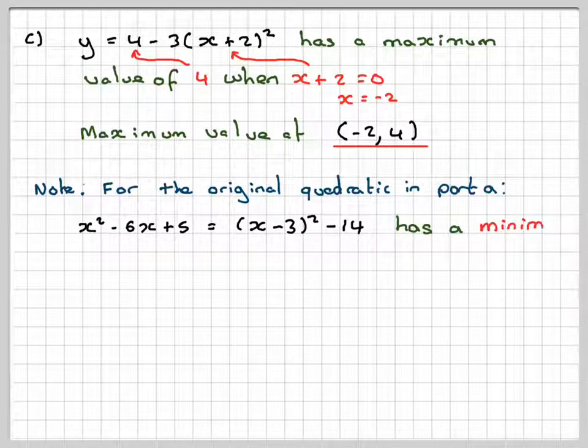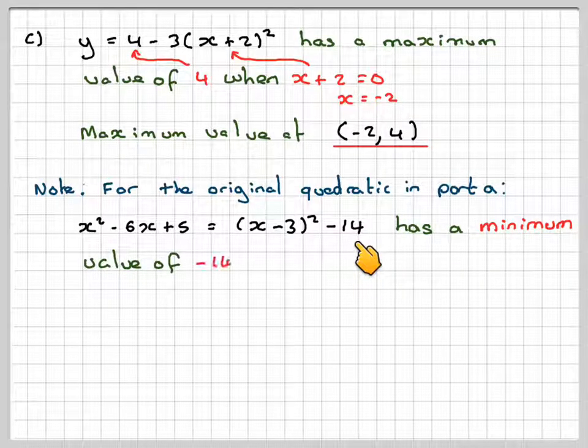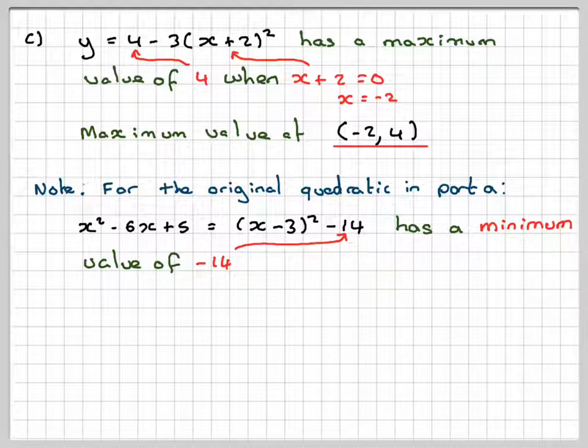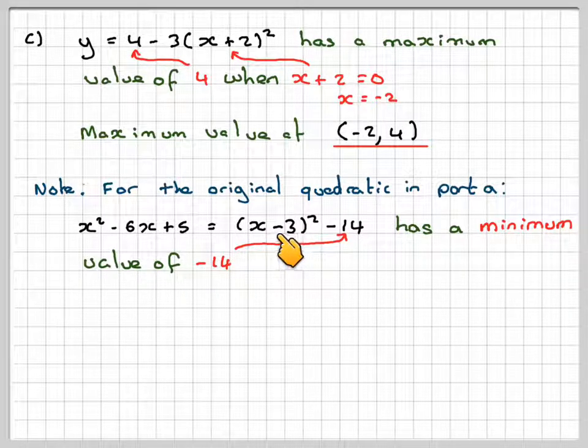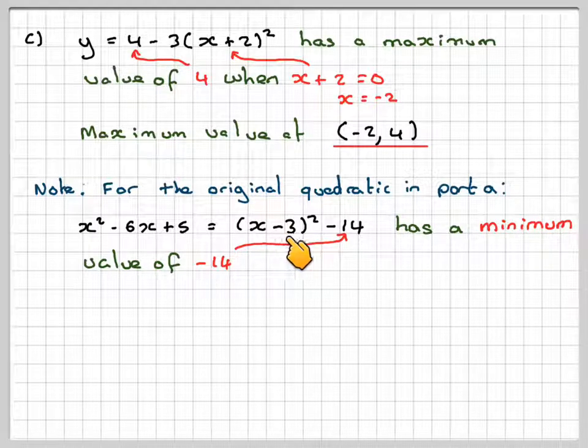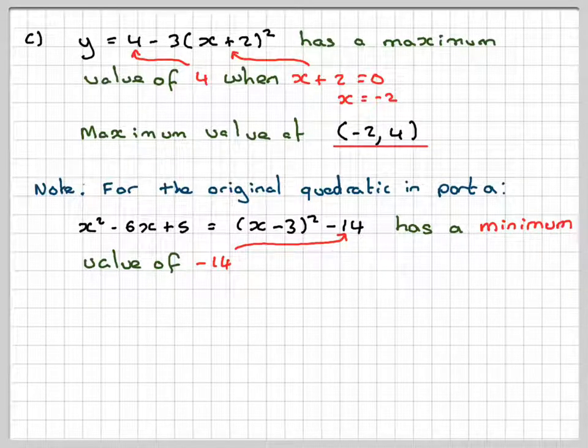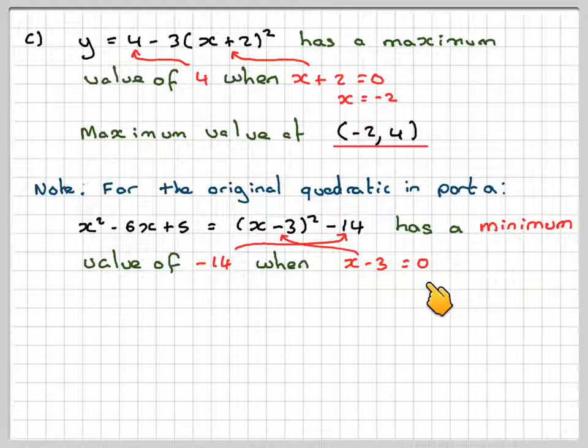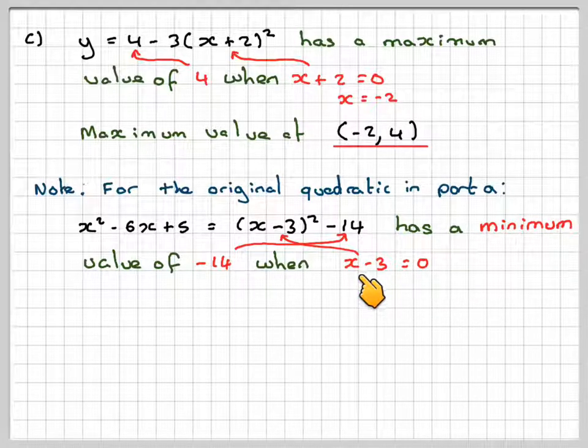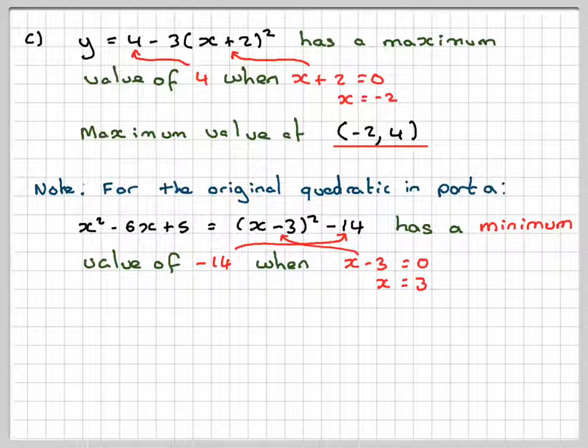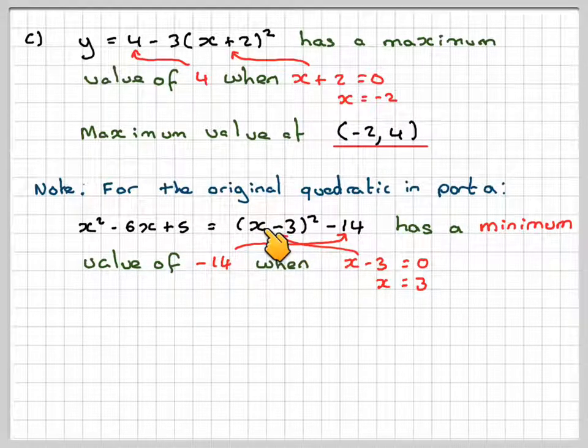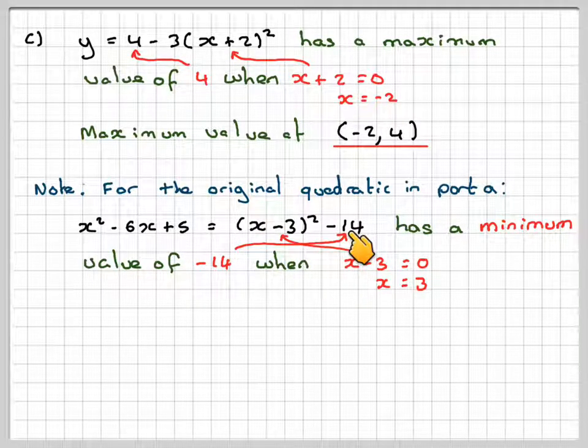Now, the lowest value that this could ever be is -14, because every time you put a number in here, it will become positive and you take it away from 14, that will get more than 14. So this is the minimum value here. So when x = 3, x - 3 = 0, 3 - 3 is 0, 0² minus 14 is -14.